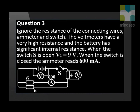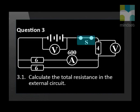Ignore the resistance of the connecting wires, ammeter and switch. The voltmeters have a very high resistance and the battery has significant internal resistance. When the switch S is open, the voltmeter V1 reads 9 volts. When the switch is closed, the ammeter reads 600 mA. The switch S is now closed.